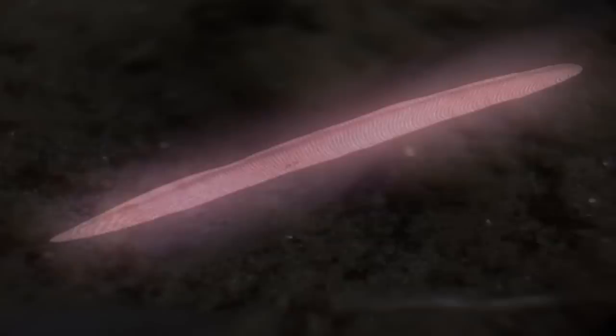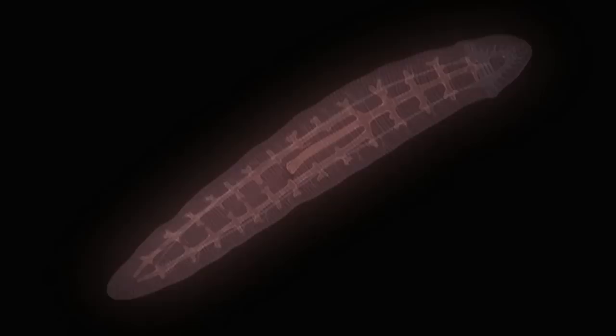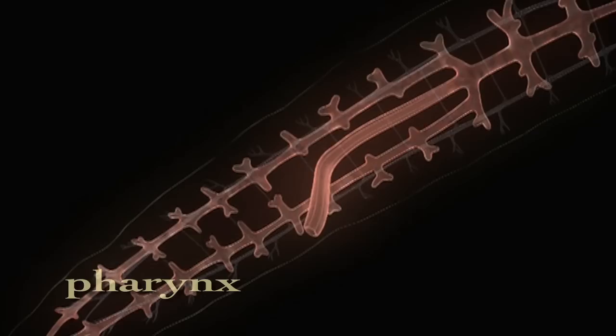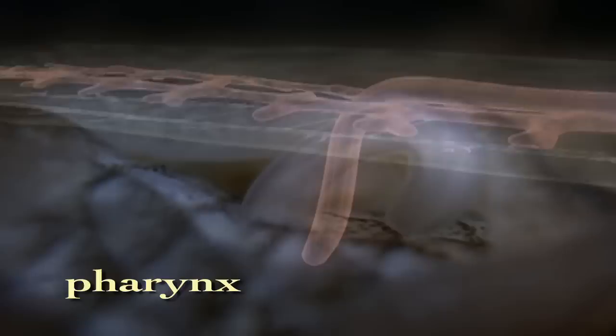The mouth of the flatworm, oddly, is not in its head. It's on the underside of the body. From this mouth, the flatworm launches a device called the pharynx, which it uses to suck down its prey.